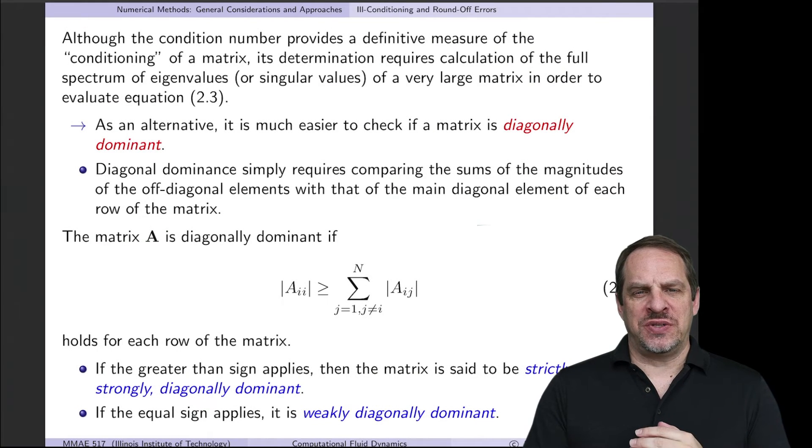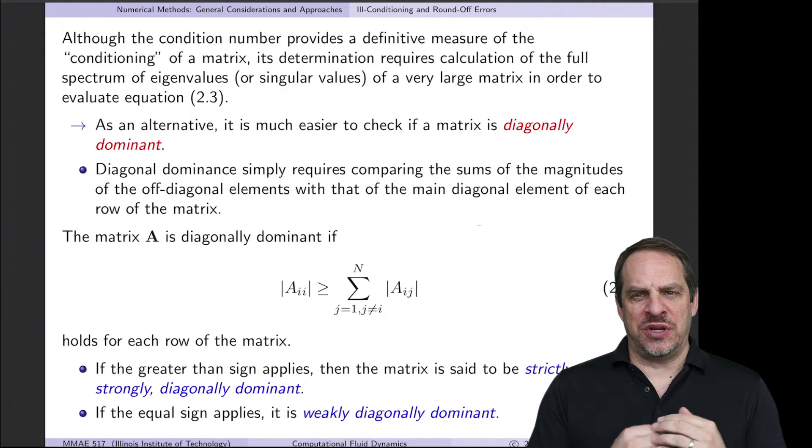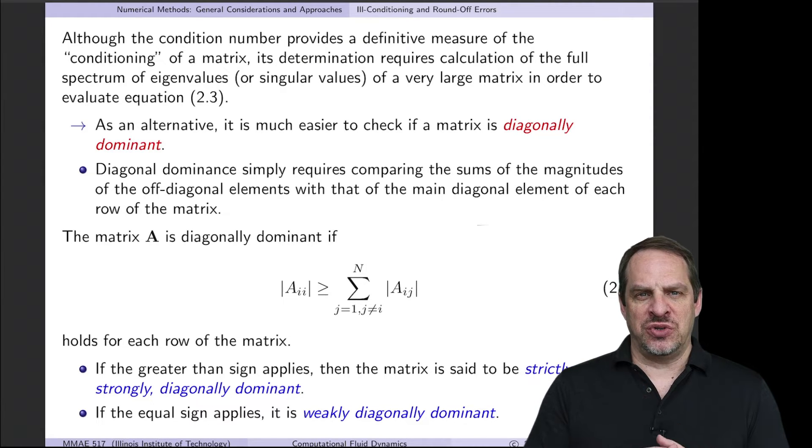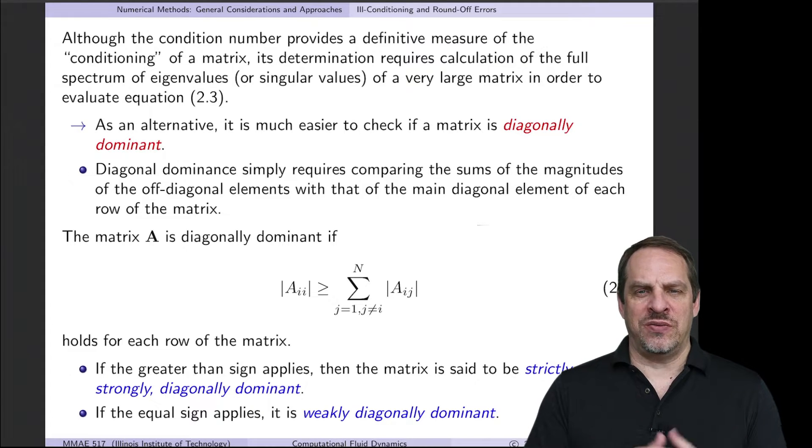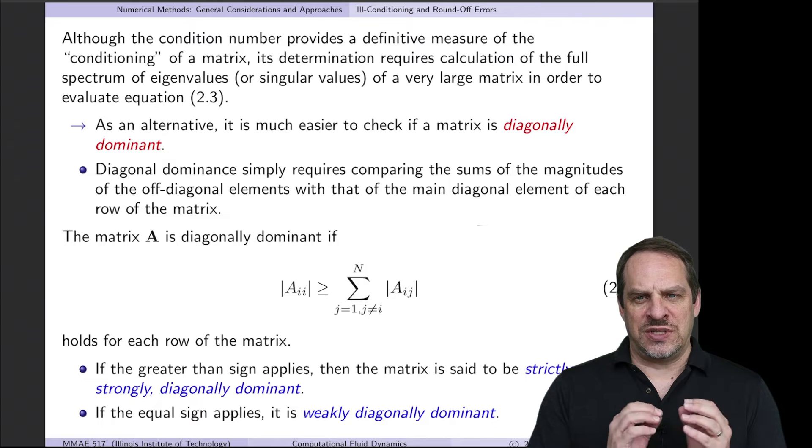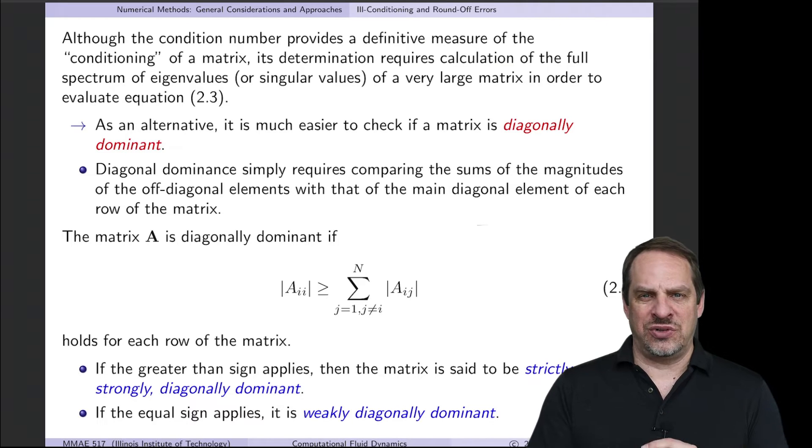In the previous couple of videos, we've been discussing how numbers are represented on a computer and how that produces round-off error and how the condition number can be used to diagnose how much of an effect that round-off error may have on our system of equations and getting its solution. So here we're going to look at an alternative to the condition number, as well as look at the Hilbert matrix as an example of a very ill-conditioned matrix and the consequences that has on its solution.